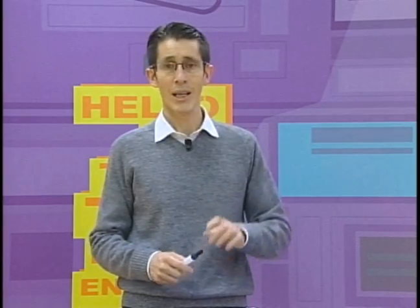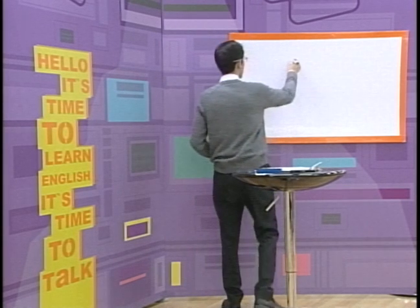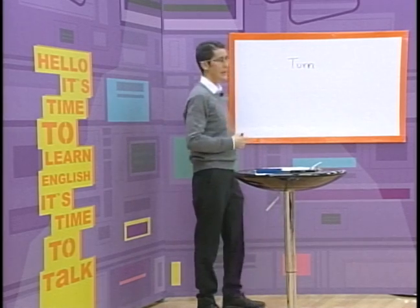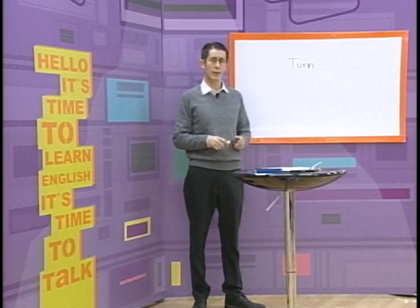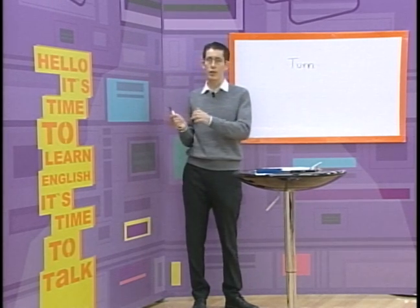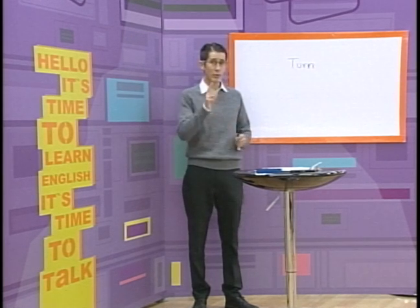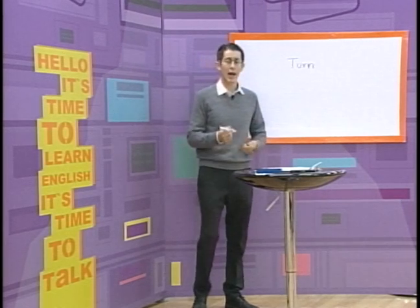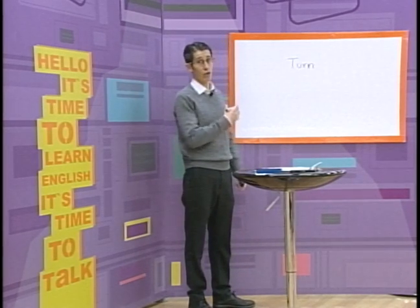Y antes de ir al tema de la clase de hoy, quiero indicarles solo un poquito de este verbo turn. De este verbo turn podemos sacar algunos verbos. El verbo turn quiere decir girar. Por ejemplo, turn right — gire a la derecha. Turn left — gire a la izquierda. Pero cuando hablamos de cosas como la radio o la televisión, hay algunos verbos que podemos utilizar con turn.